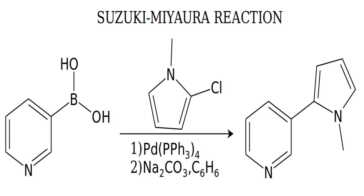Back to the main synthesis. We perform a Suzuki-Miyaura coupling reaction with 2-chloro-1-methyl-pyrrole, tetrakis(triphenylphosphine)palladium, sodium carbonate, and benzene in order to obtain a nicotine precursor.